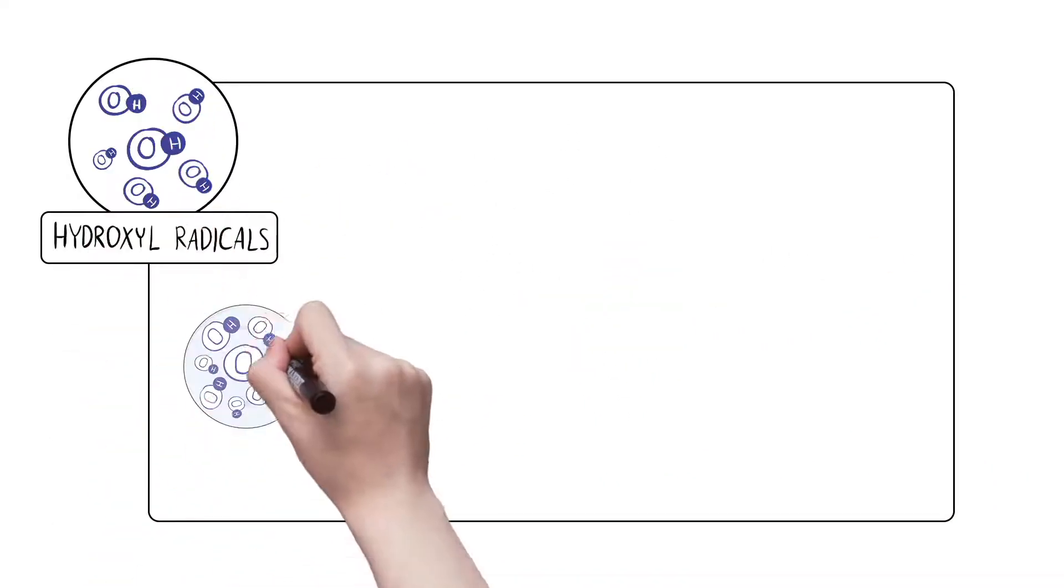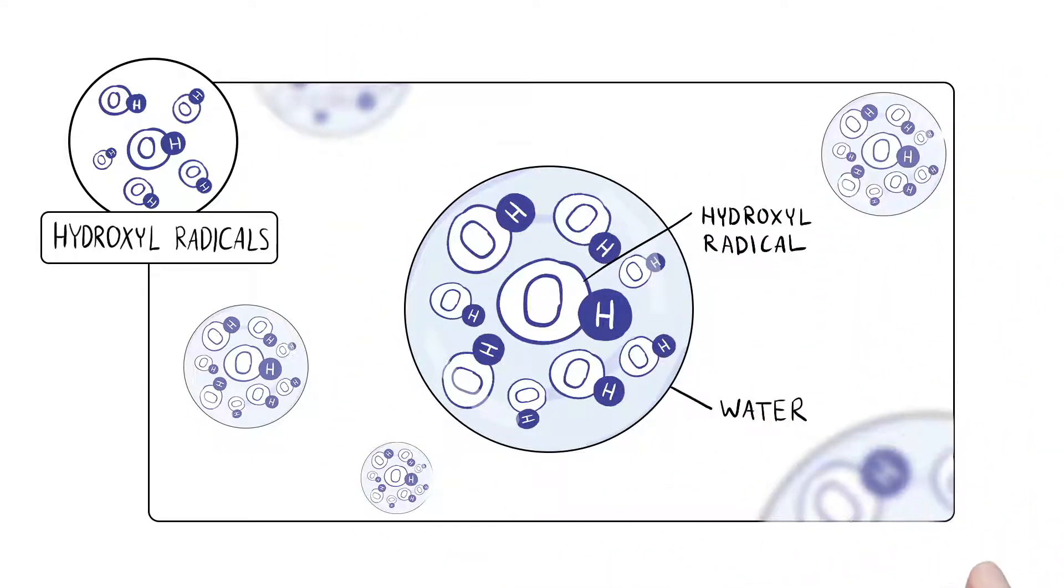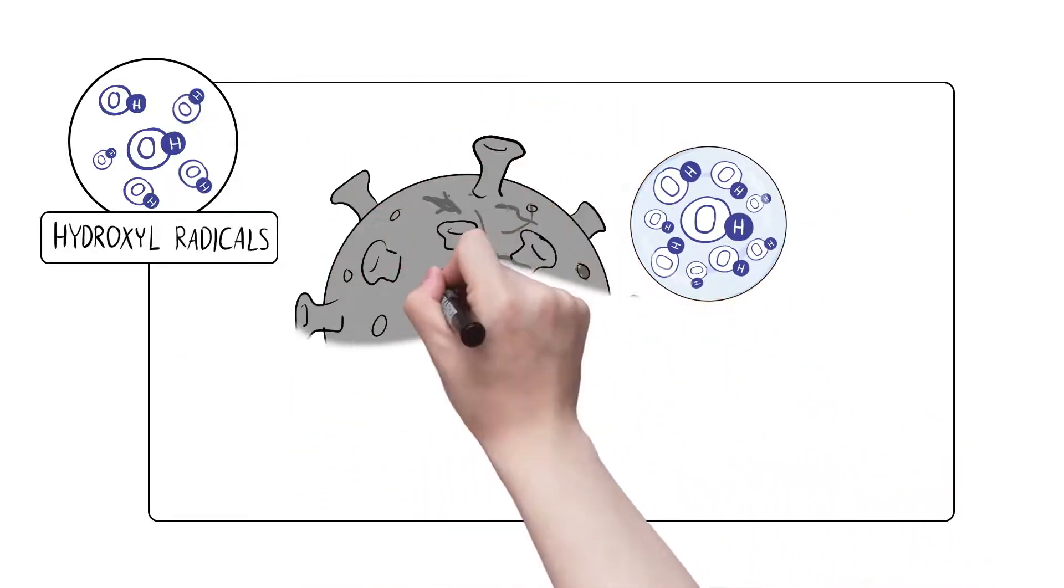3. Hydroxyl radicals are encapsulated in water by the Panasonic technology and the resulting ions are called nanos. These nanos are found in Panasonic Nano-EX air conditioners.